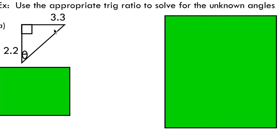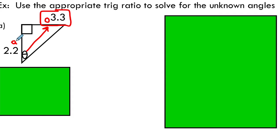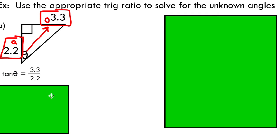Looking at this example, we're asked to use the appropriate trig ratio to solve for the unknown angle. Instead of the unknown being a side length, it's actually an angle. We can look at this unknown angle and say: I have a side length opposite to my angle, so I'll label that O for opposite, and I also have a side length adjacent to my unknown angle. Thinking back to SOHCAHTOA, I need a trig ratio that relates opposite and adjacent — that's tangent. So my trig ratio gives: tan(θ) = 3.3 over 2.2.